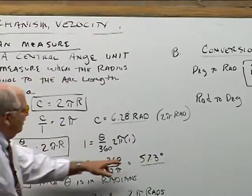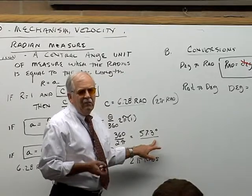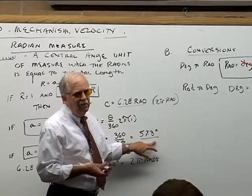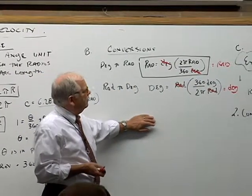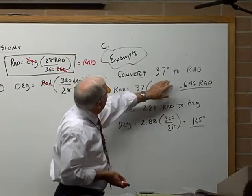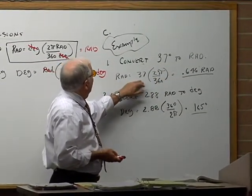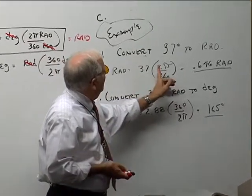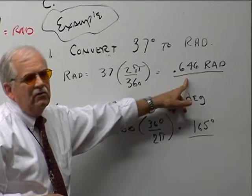Also, the 57.3 degrees may help you too. Some people like to go this way as well. But in formulas, these conversions work a lot easier. So finally, here's a couple examples. If I want to convert 37 degrees to rads, I just write this down: rads equals 37 times the quantity 2π over 360, and there we go, 0.646 rads.